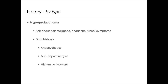For hyperprolactinaemia, high prolactin levels can cause amenorrhea. Pregnancy is a common cause as it raises prolactin. Ask about galactorrhoea — milk coming from the breasts — headache, because it could be a brain tumour, and visual symptoms. Also take a thorough drug history, because dopamine stops prolactin — so anything blocking dopamine will raise prolactin. Relevant drugs include antipsychotics, antidopaminergics like domperidone, and histamine blockers.